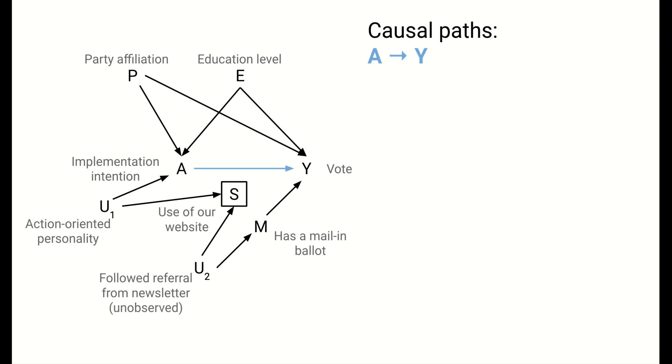We have one causal path, the chain A to Y in blue. This chain generates the desired causal parts of associations that we want to keep. There are three non-causal paths in orange, two paths through the confounders P and E, and one path resulting from selection bias. These non-causal paths generate unwanted associations between treatment and outcome that lead to a lack of exchangeability and that we would like to block.